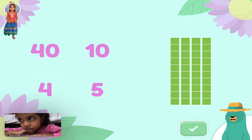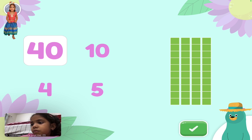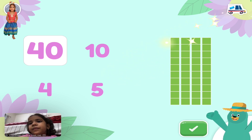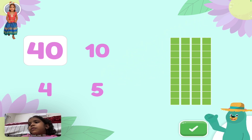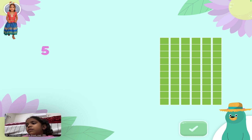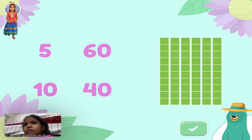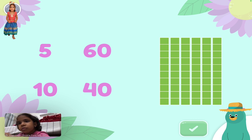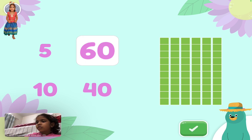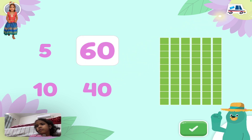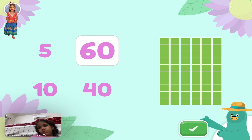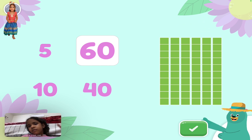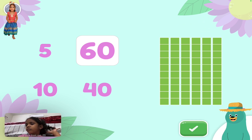How many blocks are there total? Great! Each rod is made up of ten blocks. There are forty. How many blocks are there total? Neat! Each rod is made up of ten blocks. There are sixty.